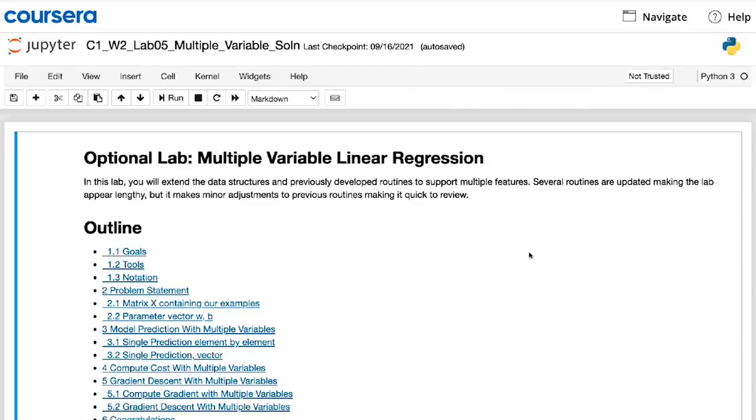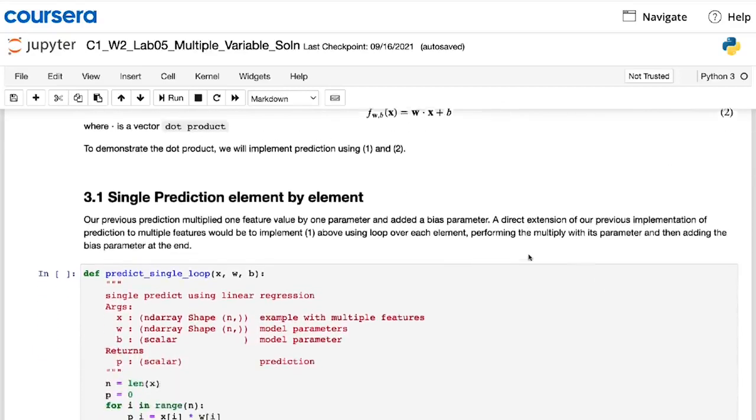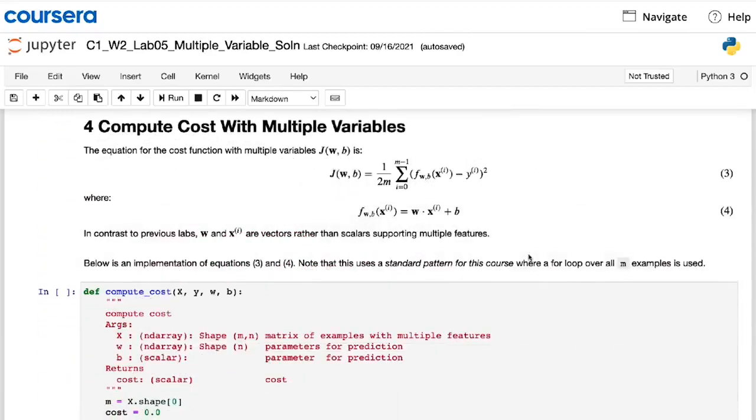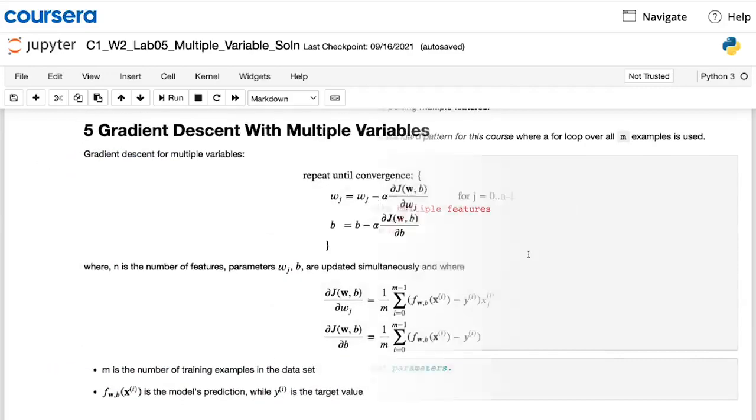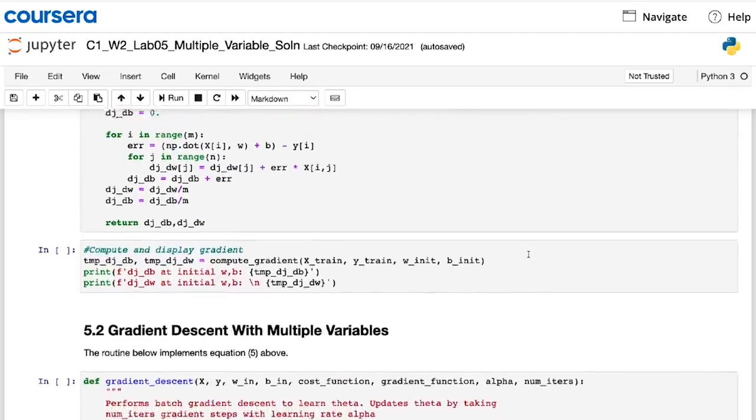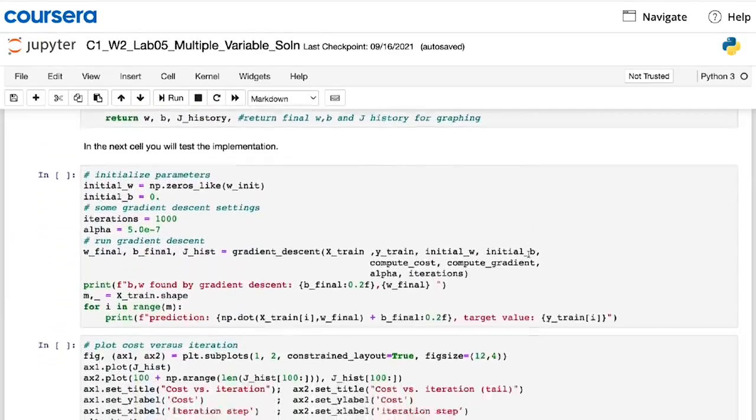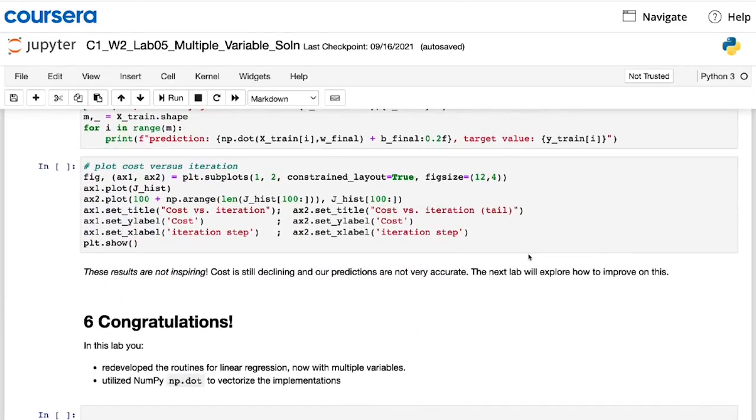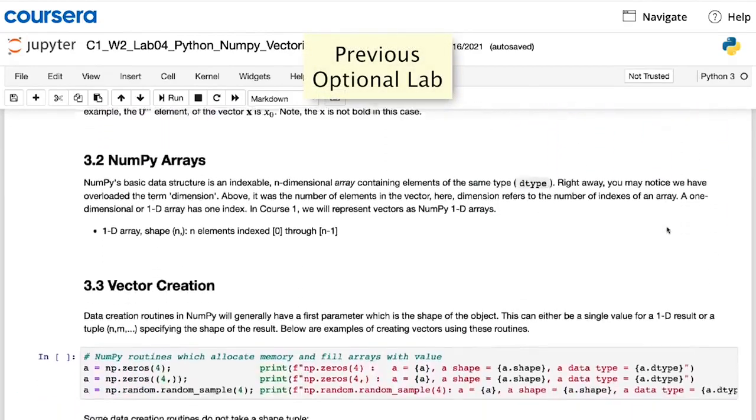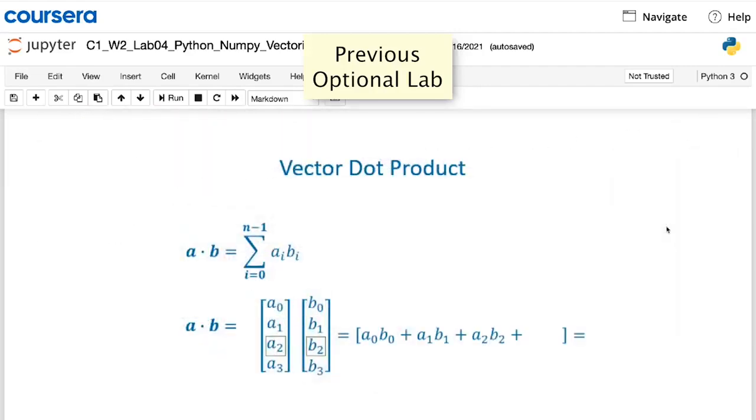In the optional lab that follows this video, you see how to define a multiple regression model in code, and also how to calculate the prediction f. You'll also see how to calculate the cost and implement gradient descent for a multiple linear regression model. This will be using Python's NumPy library, so if any of the code looks very new, that's okay. But you should feel free also to take a look at the previous optional lab that introduces NumPy and vectorization, for a refresher of NumPy functions and how to implement those in code.